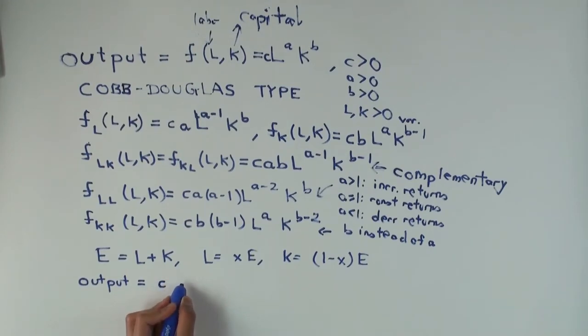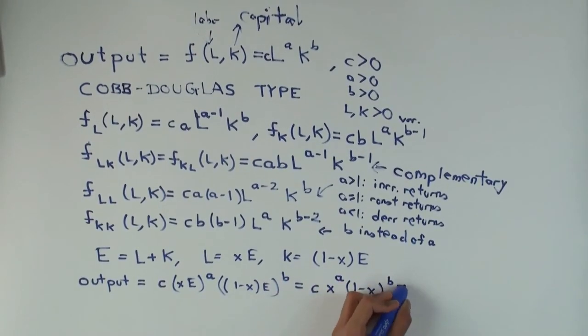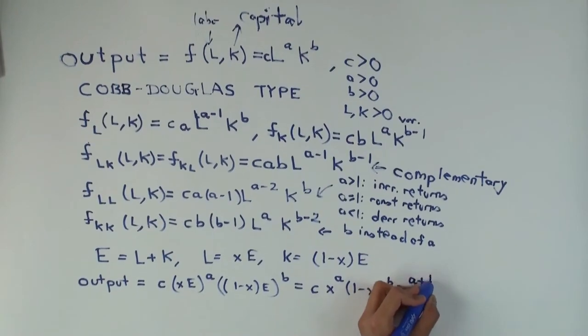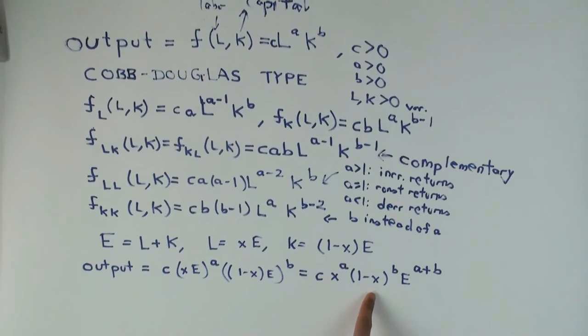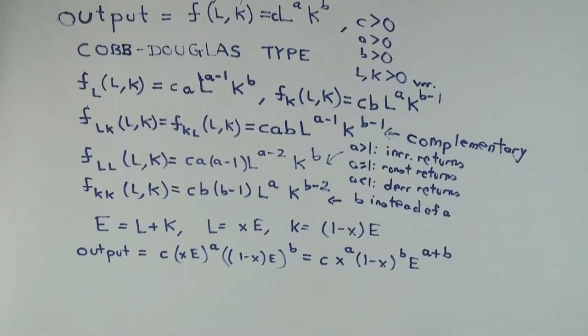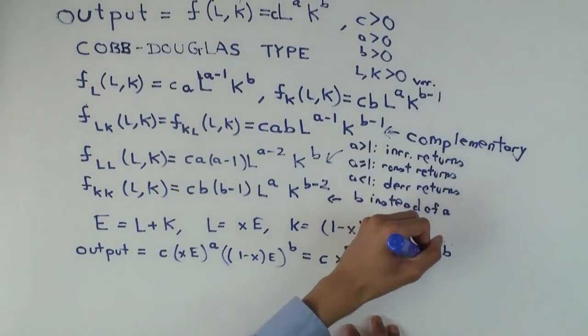It's c times (xE) to the a times (1 minus x)E to the b. That becomes c times x to the a times (1 minus x) to the b times E to the a plus b. That's the output function. Now what do we see then? We see that the output function, now what is the combined returns? That really depends on a plus b.